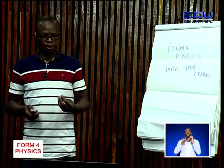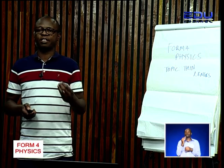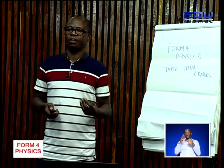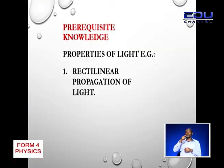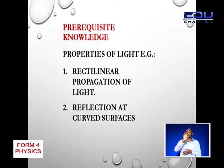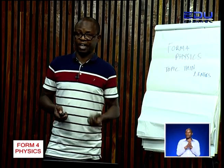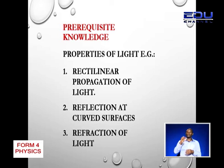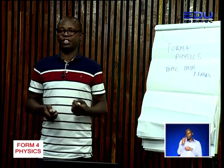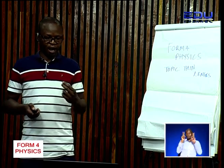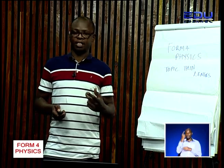So, what do we need to know? Basically, we need to know properties of light, which we have been covering all the way from Form 1. The first one would be rectilinear propagation of light. This would also include reflection at curved surfaces and refraction of light. Those three topics are the prerequisite knowledge you need to understand this topic, thin lenses. I would advise you to go through those topics to be able to understand the subsequent lessons.